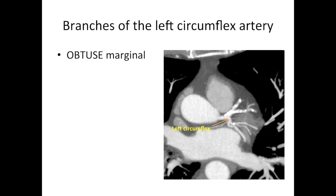Here we've got the left circumflex artery, that branch off the left main stem. The atrioventricular branch of the circumflex artery is the one going in between the atrium and ventricle, down and then around behind the heart. The obtuse marginals are the branches of the left circumflex artery.